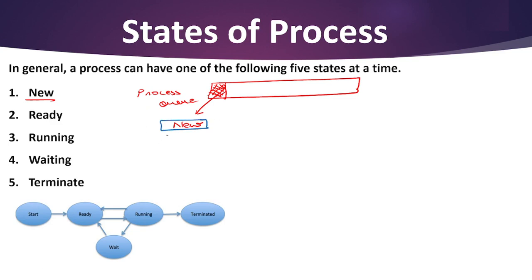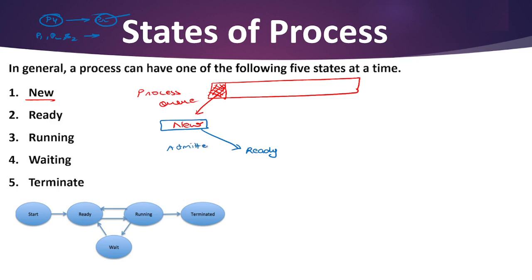The second state is Ready. Our process goes to the Ready state, and at this moment the process is waiting to be assigned a processor by the operating system. As discussed, process P4 is using the printer, so processes P1, P2, and P3 are all in the waiting queue, waiting for the printer to be released by P4. From New to Ready, the process is admitted. Our process is now at the ready queue.